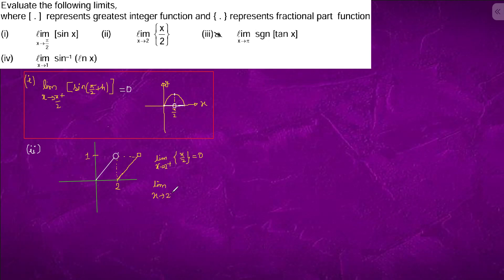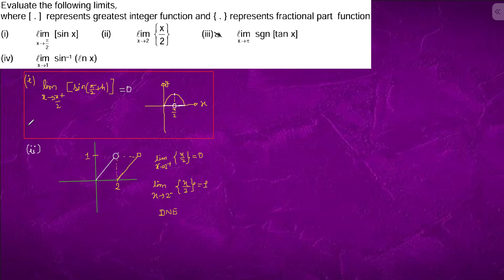The limit x tending to 2 minus of the fractional part of x divided by 2 will be close to 1. So the limit x tending to 2 does not exist since the left-hand and right-hand limits differ.